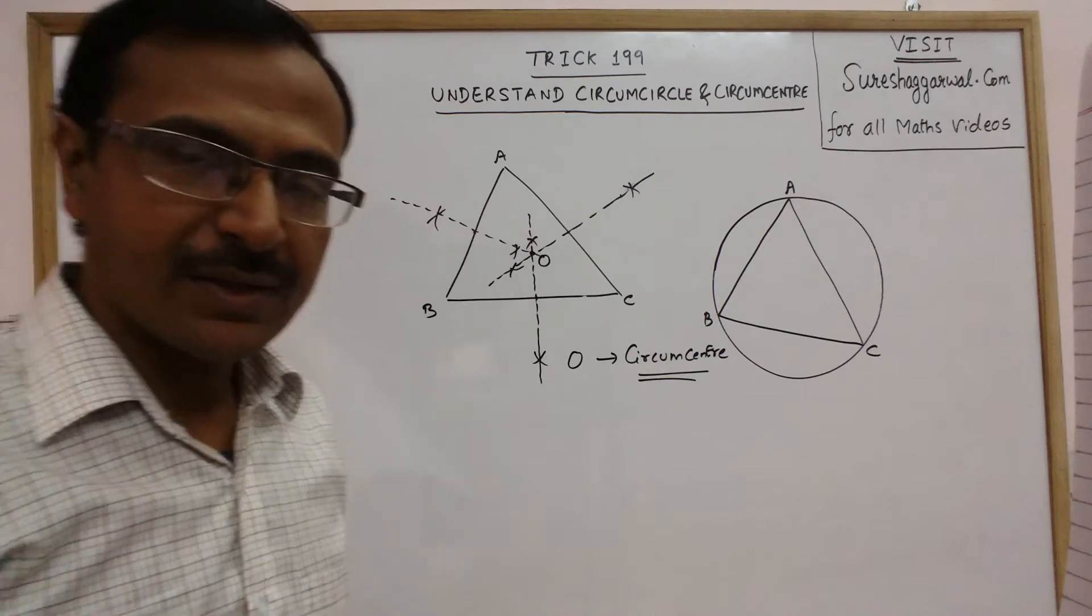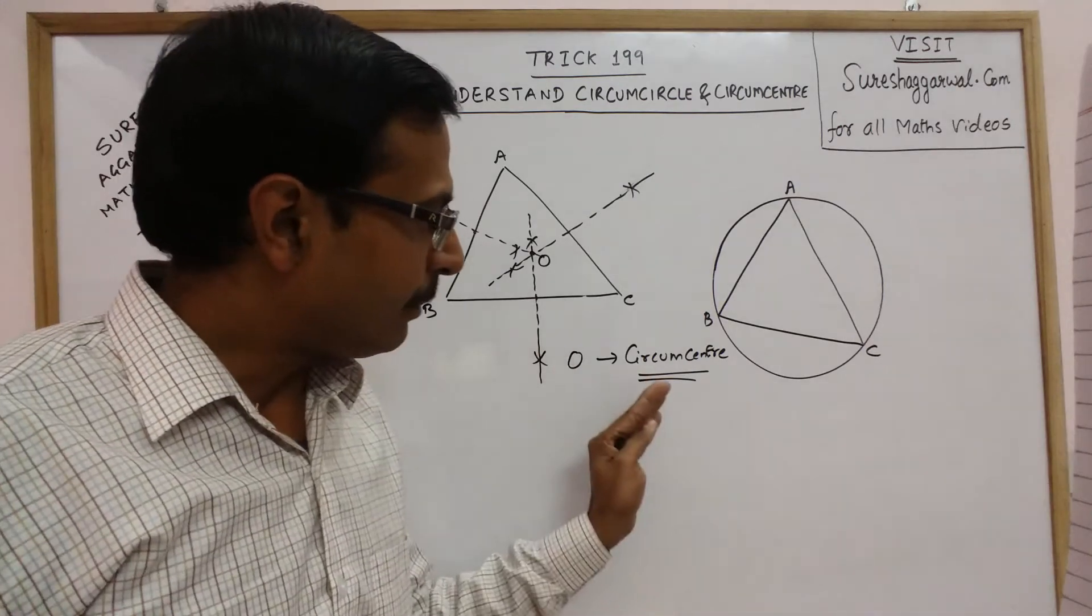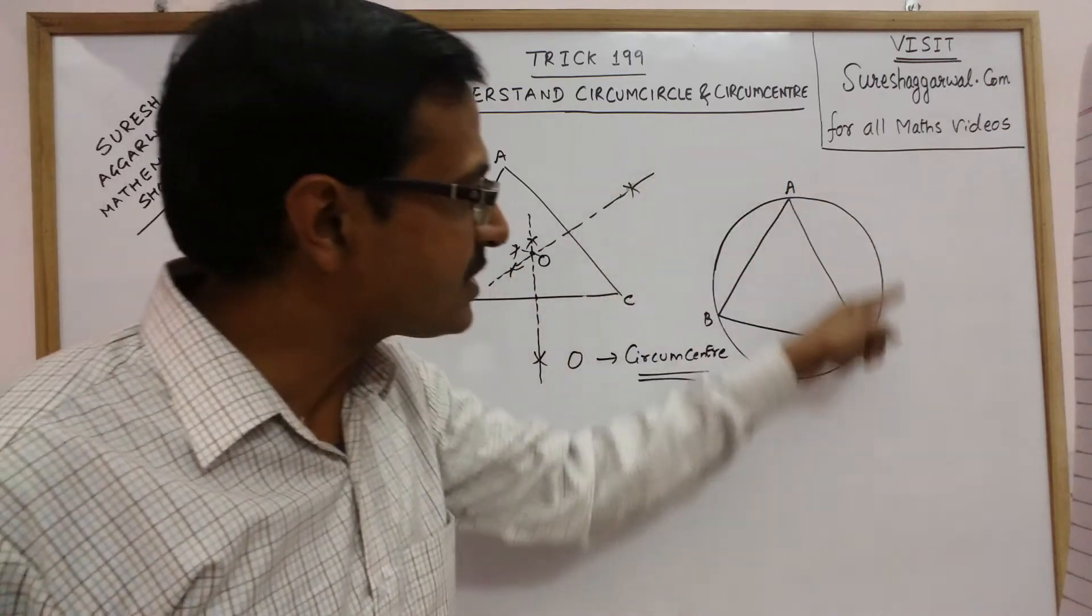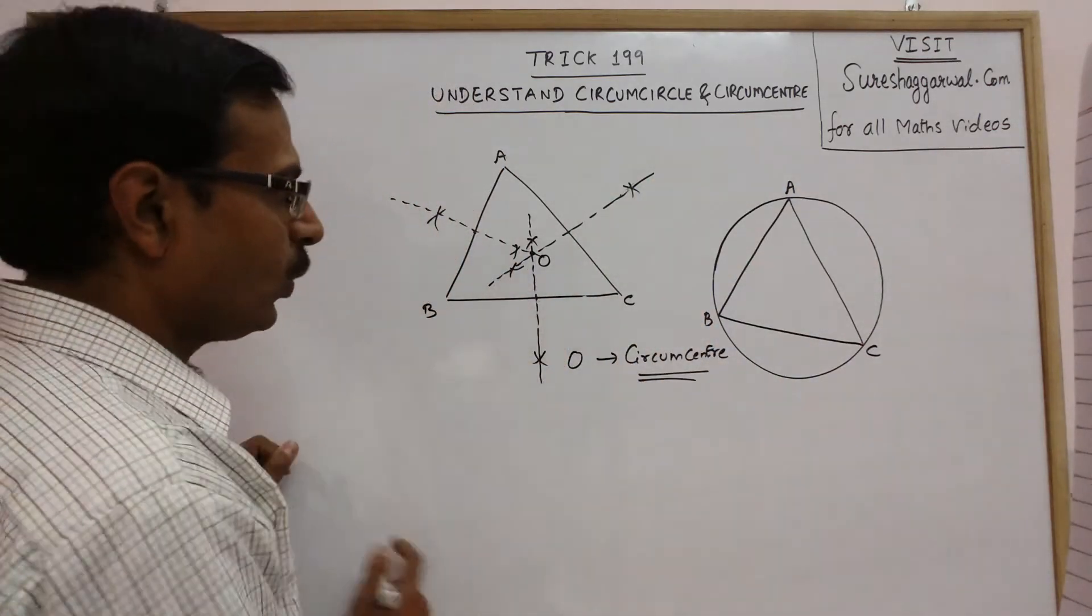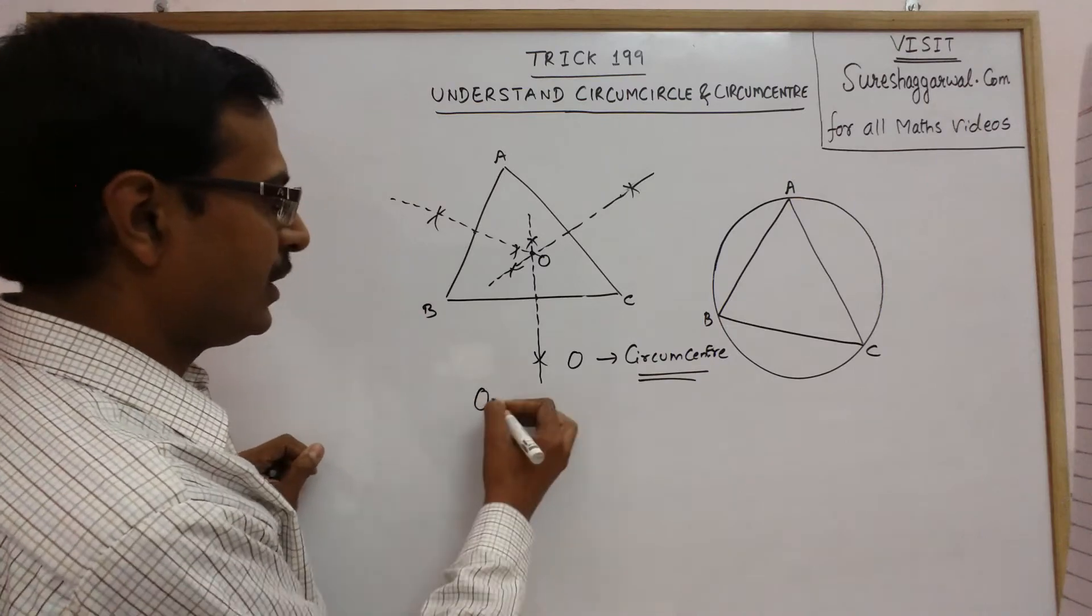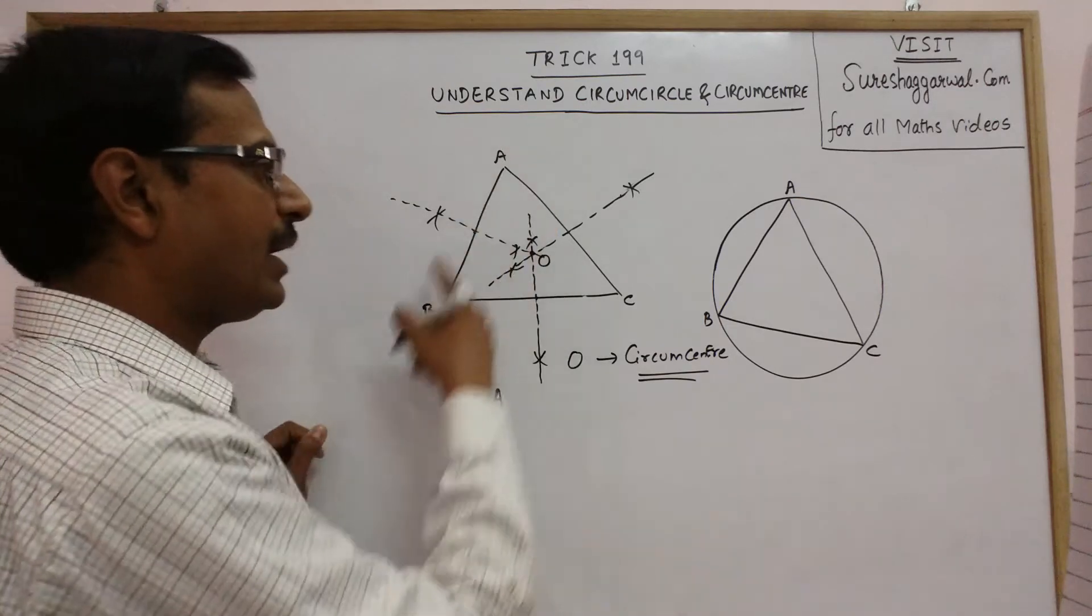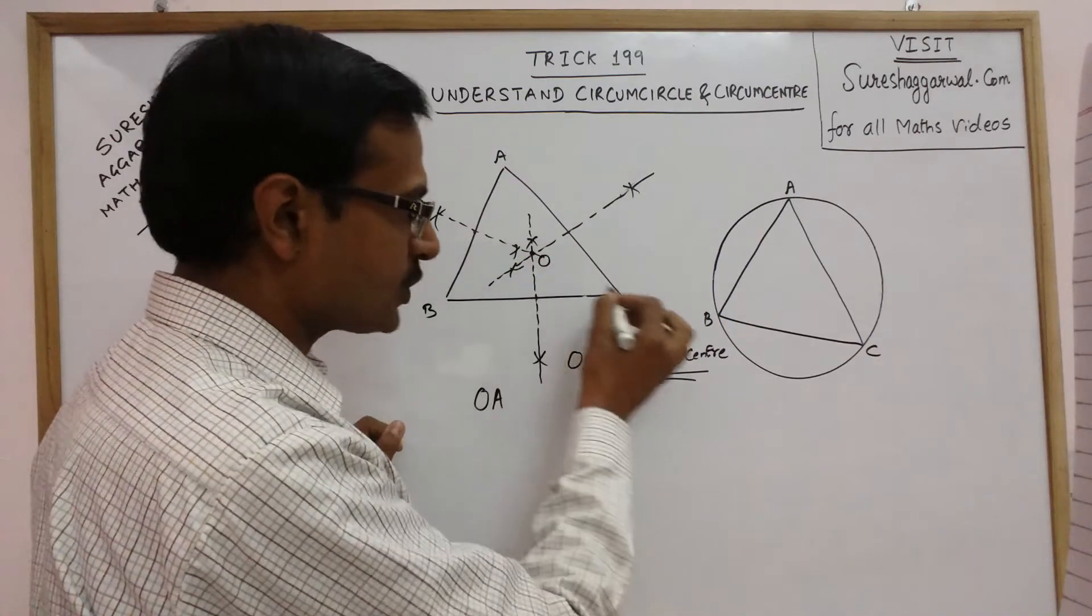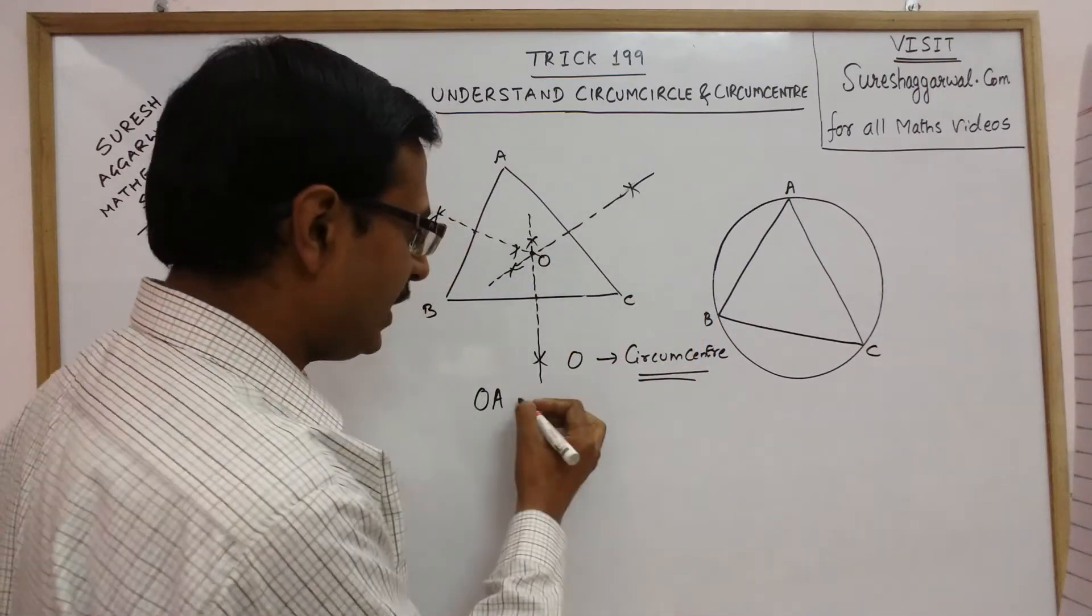Why this is called circumcenter? Because this becomes the center of the circumcircle. Now, this point O will be equidistant from A, B and C. If you join OA, OB or OC, these three lengths will be equal.